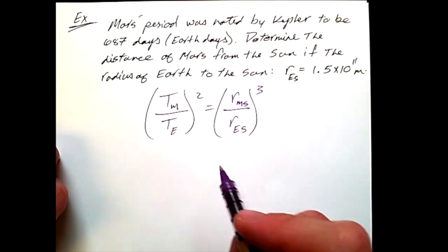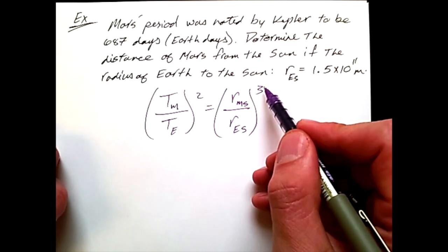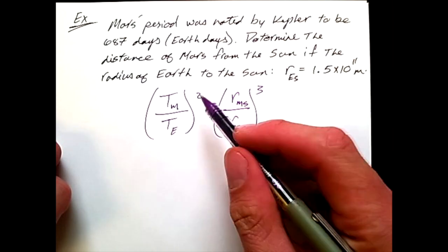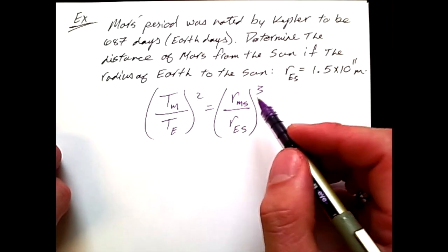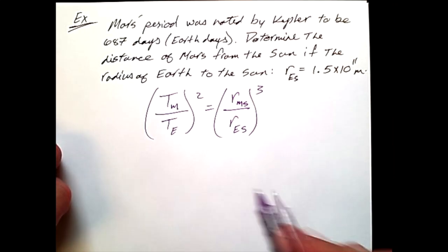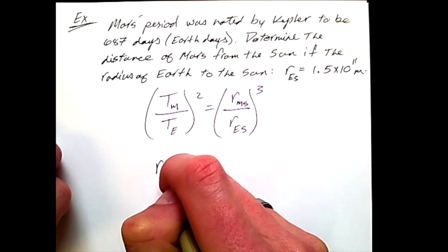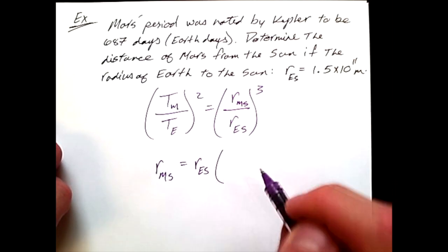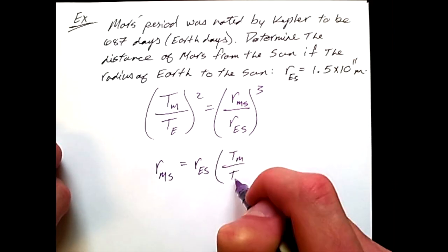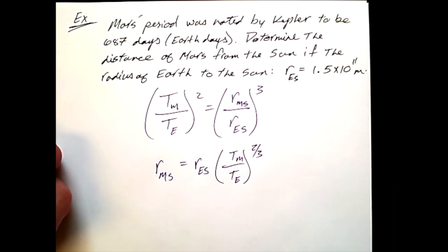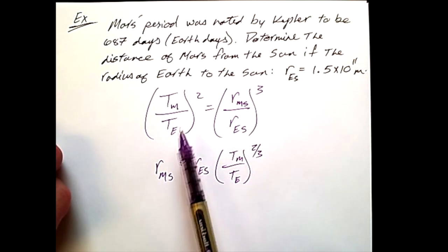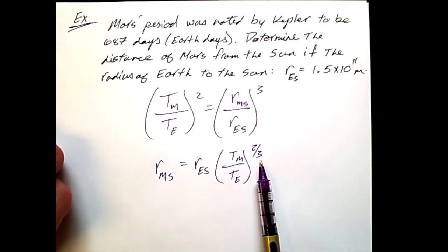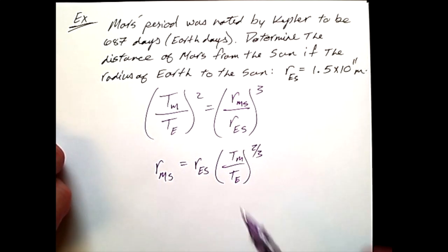I find it useful to go ahead and solve for the radius of Mars compared to the sun before entering the numbers. If we distribute the cube term onto each value and solve for the radius of Mars compared to the sun, what we end up with is: R_Mars-Sun equals R_Earth-Sun times the quantity (T_Mars over T_Earth) to the two-thirds power. If you didn't follow that step, go through the math of cubing each term, solving for R_MS, and then taking the cube root. A fractional power is simply the root.